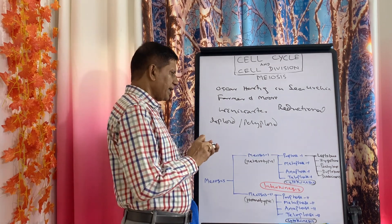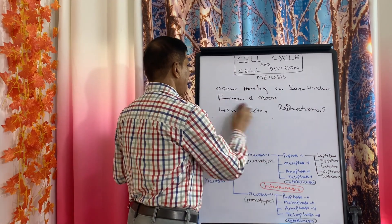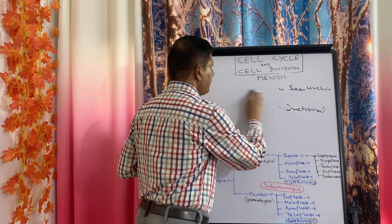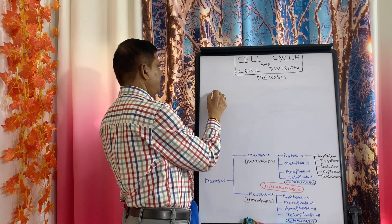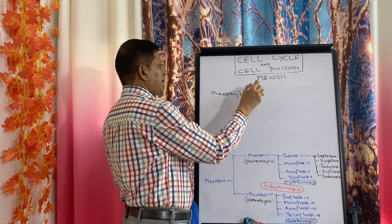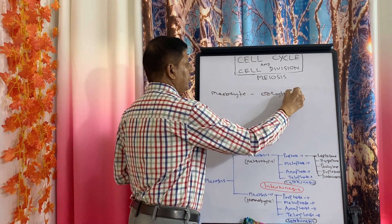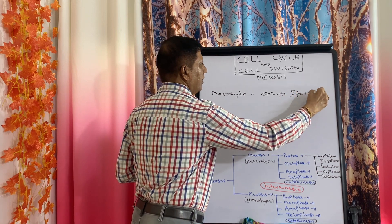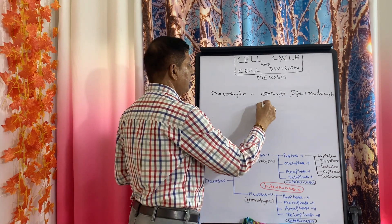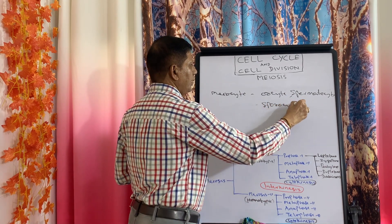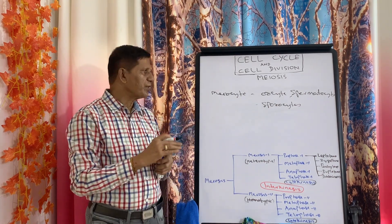The cell in which meiosis takes place is known as a meiocyte. This is important from an exam point of view. Examples of meiocytes: one is oocyte, the other is spermatocyte. These are usually in case of animals, and in case of plants there may be sporocytes when spores are produced.